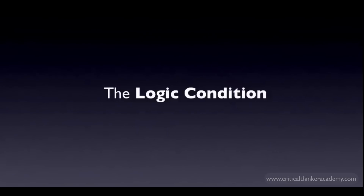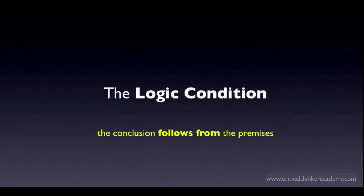The logic condition is another necessary condition for an argument to be good. In the tutorial that introduced the notion of a good argument, we defined it in very general terms. The main point was to distinguish arguments that are bad because of false premises from arguments that are bad because of bad logic — these are two distinct ways an argument can fail to provide good reasons to believe the conclusion. This tutorial and the next two are devoted to exploring the logic condition further.